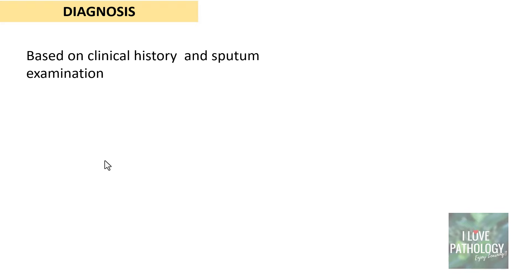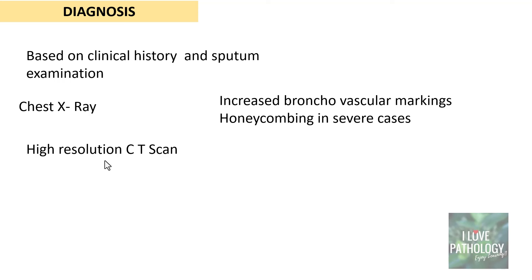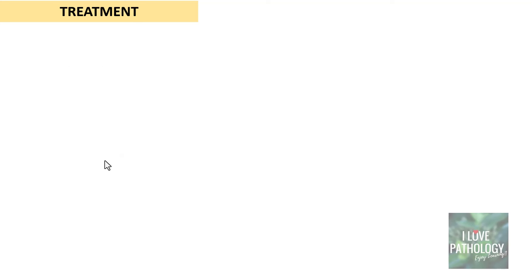How do you diagnose bronchiectasis? It is almost always based on clinical history and sputum examination. Chest X-ray can lead you to the diagnosis, and high-resolution CT scan is required for confirmation. On chest X-ray you find increased bronchovascular markings; honeycombing can be observed in severe cases, and HRCT confirms the findings.